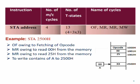Next, let us consider STA 2500H. This instruction will require 4 machine cycles. The first machine cycle is opcode fetch, the second is memory read and the third is also memory read in order to read the lower and higher bytes of the address, that is 00H and 25H respectively. The next machine cycle — STA will store the contents of the accumulator to the given address — so it will require 1 memory write instruction for writing the contents of the accumulator to address 2500H.